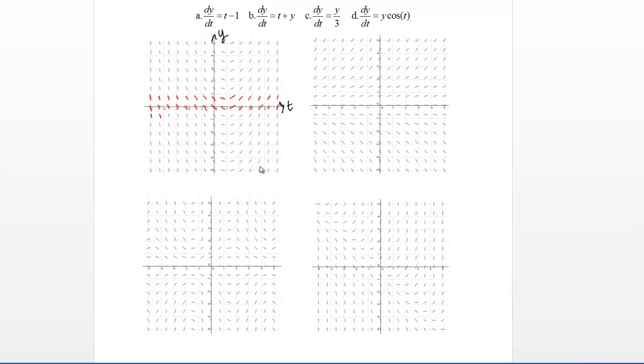You'll see that for every y value, I have that same series of slopes. They're changing in the t direction, but they're not changing in the y direction at all. That tells me that this first picture matches up with differential equation A. Differential equation A is the only one that has that feature, that it's only a function of t.